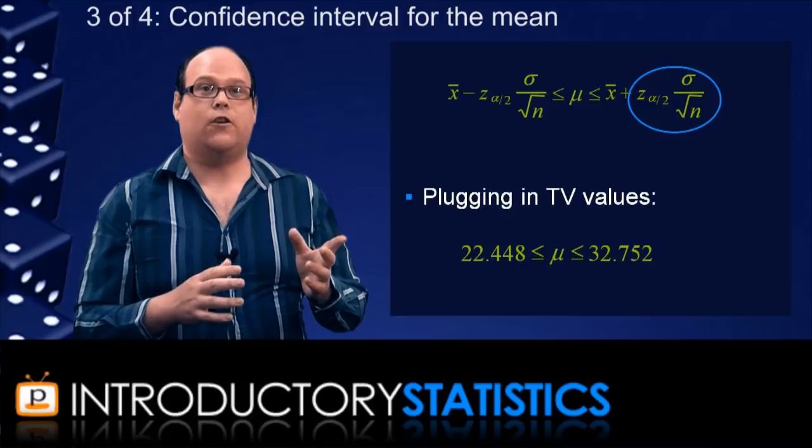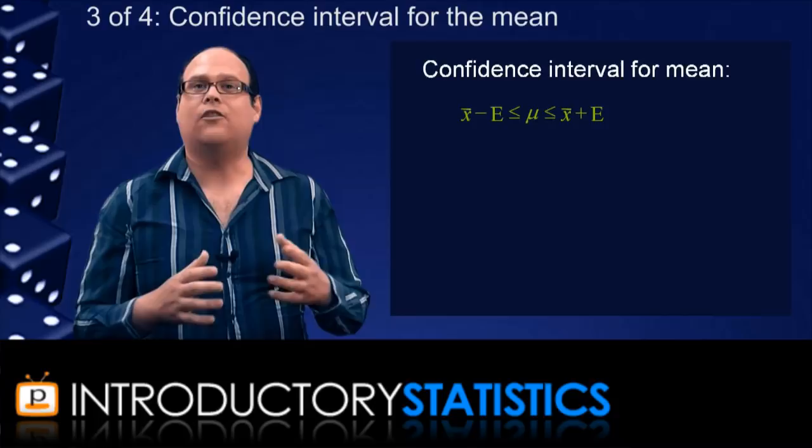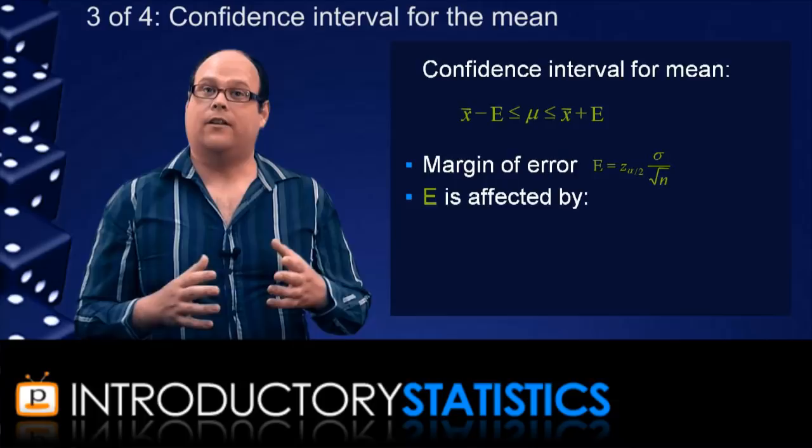In fact, this term is so important that we give it a name, the margin of error. So in a very generic sense, the confidence interval is given by this simple formula. Of course, the term E in that formula, the margin of error, contains a lot of the information in the confidence interval, and that margin of error is affected by three things.